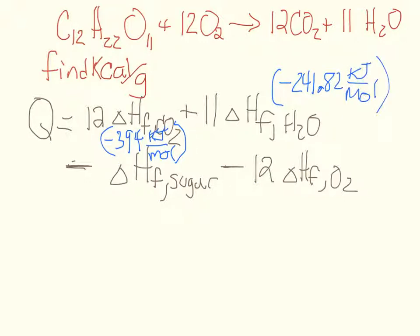Okay, referring to our sheet, we see that the value for sucrose is negative 2,221 kilojoules per mole, and oxygen. Well, oxygen actually is in its standard state, so there's nothing to react it from. So the value for oxygen is, in fact, zero. So that makes this kind of easy.